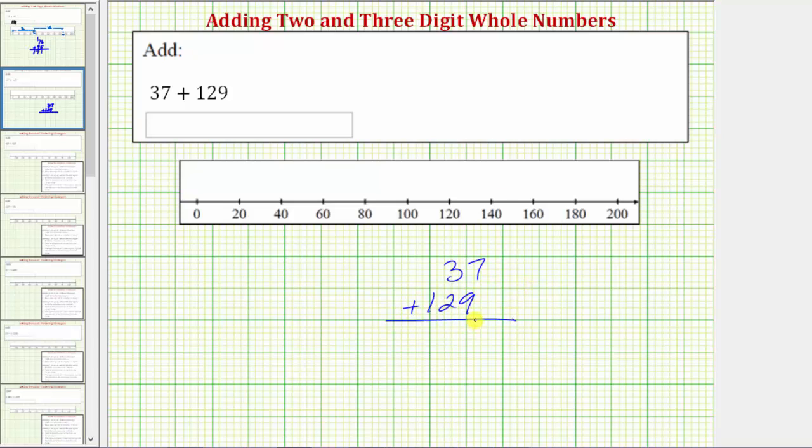Notice how we have the ones place value and tens place value lined up vertically. And here we have the hundreds place value. And now to find the sum, we begin by adding the digits in the ones place value.